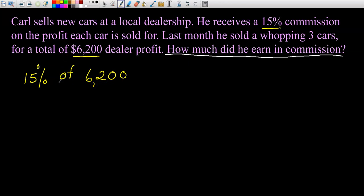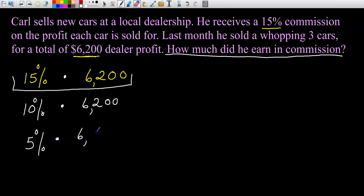In mathematics, 'of' a lot of times means multiplication. I'm going to do this part without a calculator. Let me break this 15% down into 10% plus 5%. The reason I broke it down this way is 10% is really easy to work with. I'm going to take 10% of $6,200 and then 5% of $6,200.